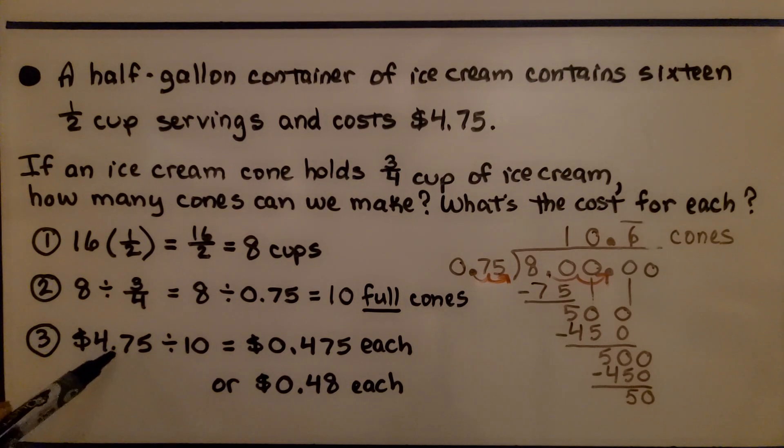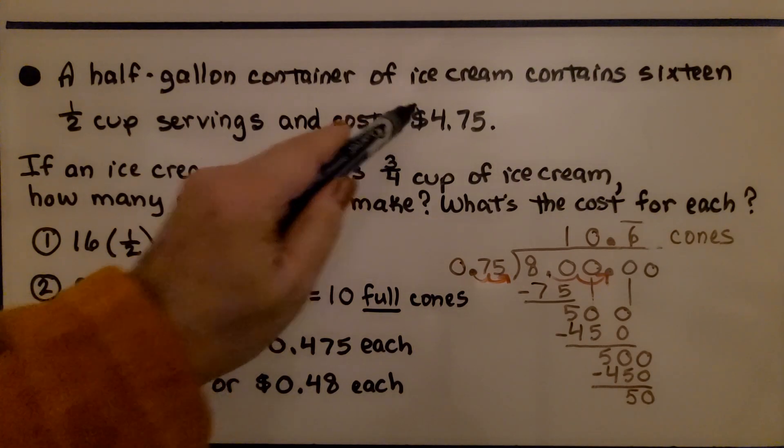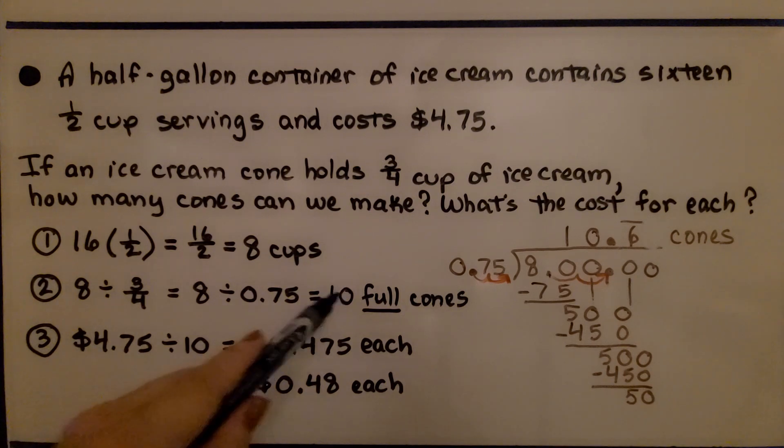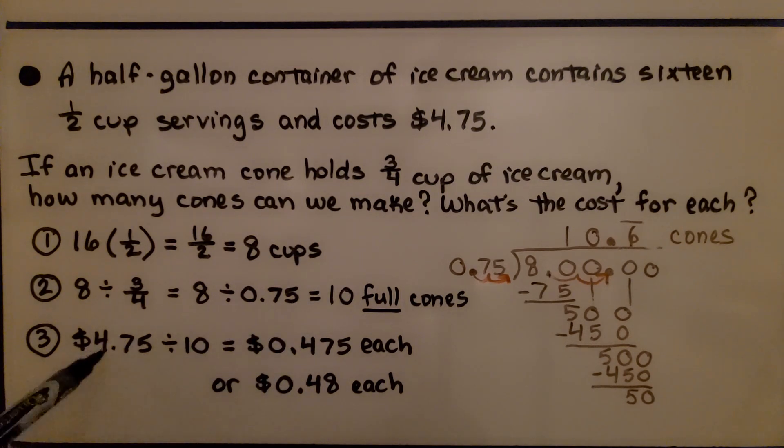We have $4.75 for the cost of that half-gallon. We know we can get 10 full cones. When we do the division, we get 0.475 for each cone. Because this is money, the 5 tells the 7 to round up. We're going to have 48 cents for each cone.